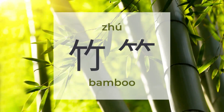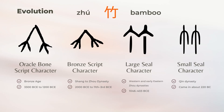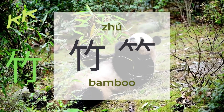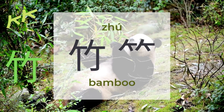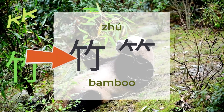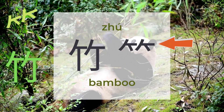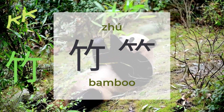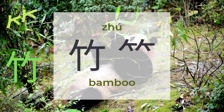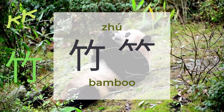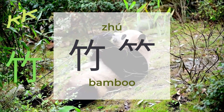竹 means bamboo. There are around 953 characters to be found under 竹. 竹 is a pictogram with two forms: the complete form 竹 and the radical form which looks like bamboo leaves. When we indicate bamboo, we use the complete form. If 竹 is in a radical form combined with other characters, it changes to the leaf form and shows on the top of characters.